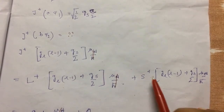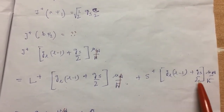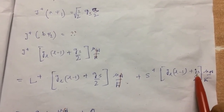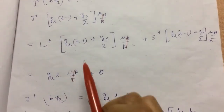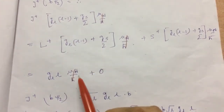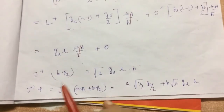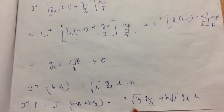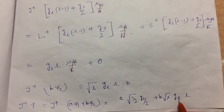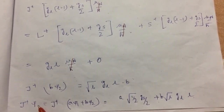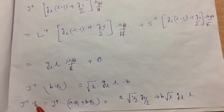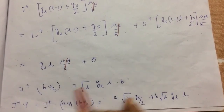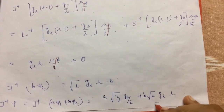For J+ acting on Chi_2: L+ raises L minus 1 to L, while S+ cannot raise spin further since it is already at the maximum value of plus half. So the result for J+ on Chi_2 is G_L times L. Now if J+ operates on the entire Chi state, which is the linear combination of Chi_1 and Chi_2, we can apply a useful trick: if Chi is already the highest state — meaning all values are at maximum — then J+ operating on Chi gives zero. This constraint allows us to determine the coefficients A and B.